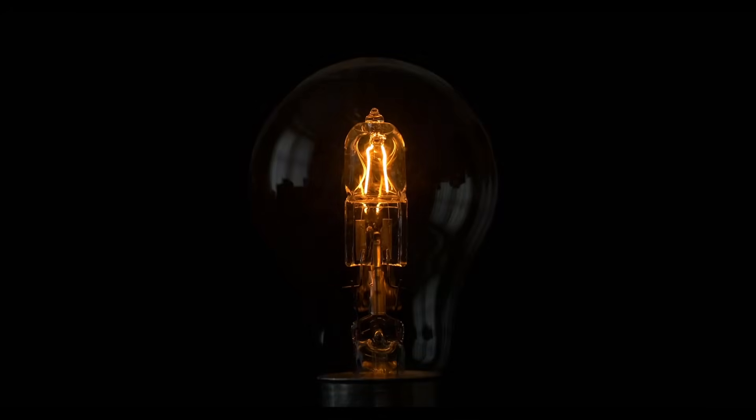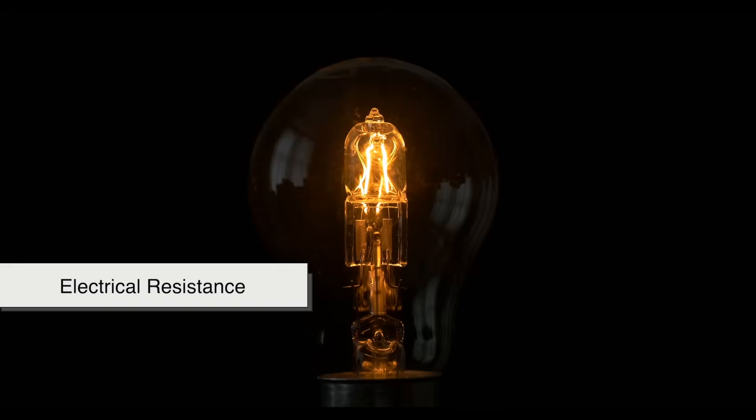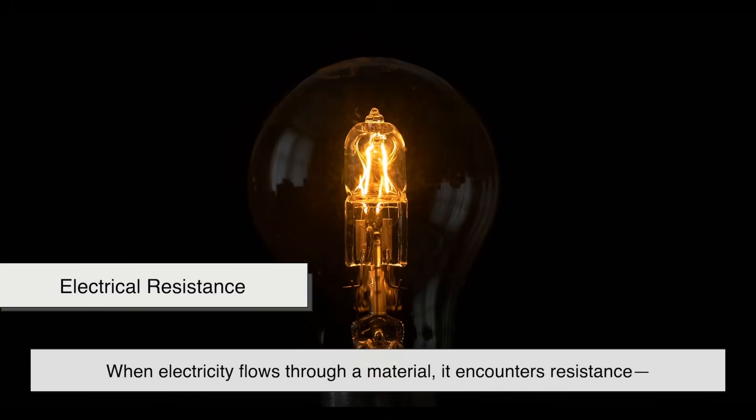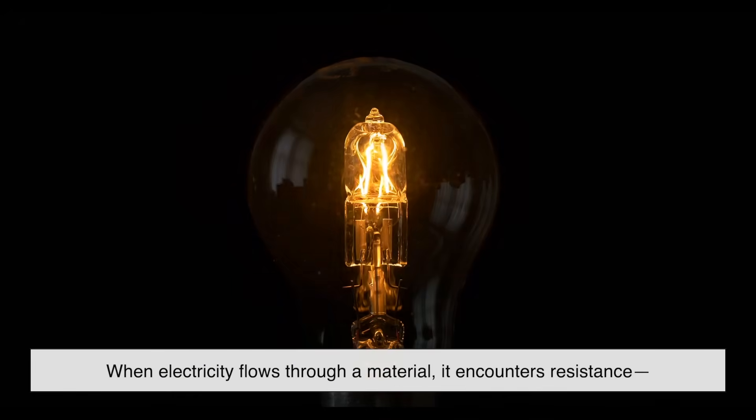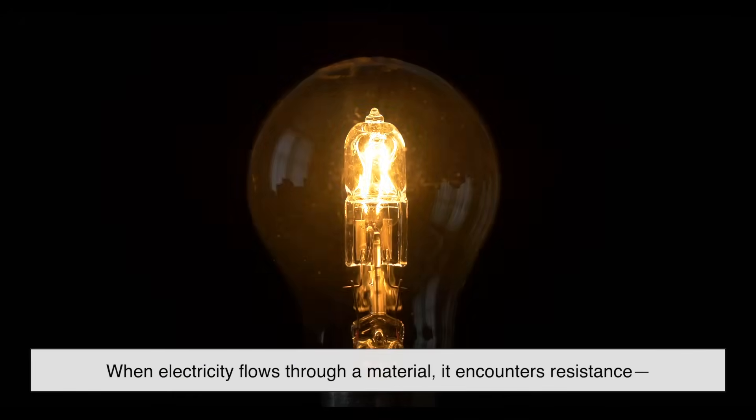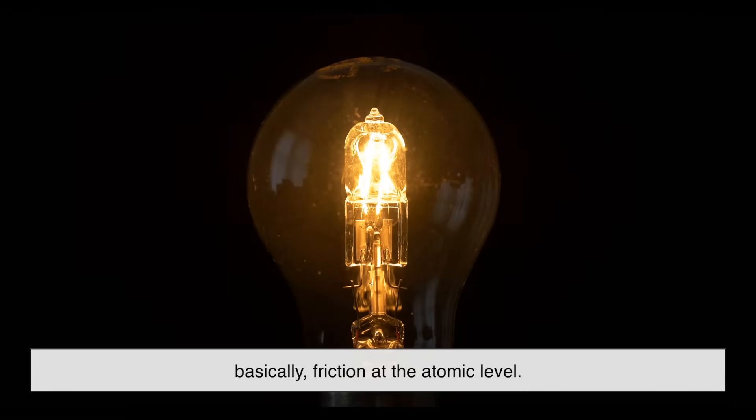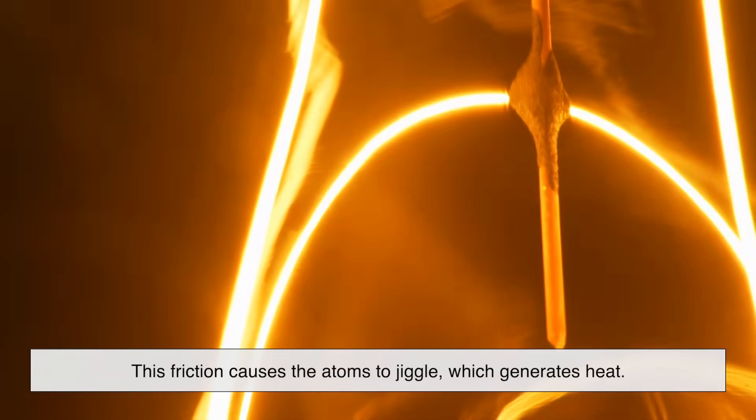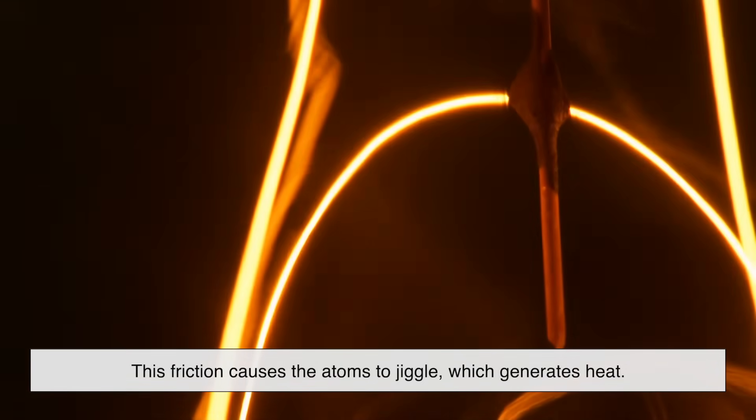Now let's talk about why the filament even heats up in the first place. It all comes down to electrical resistance. When electricity flows through a material, it encounters resistance. Basically friction at the atomic level. This friction causes the atoms to jiggle, which generates heat.